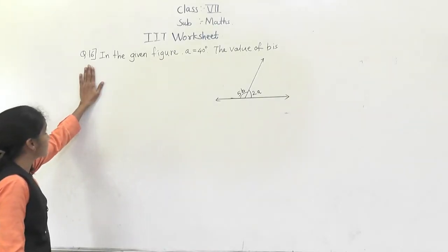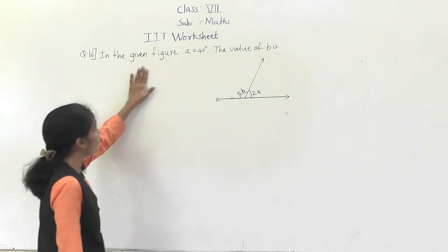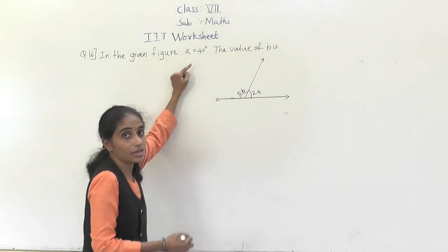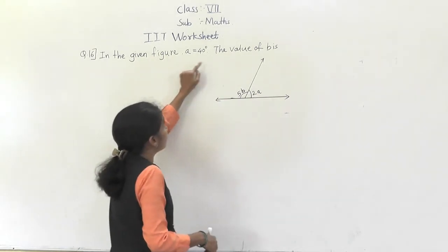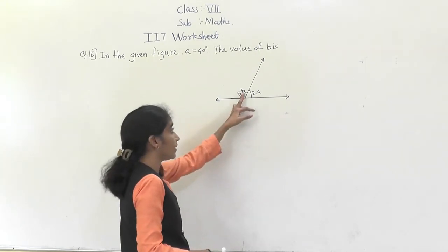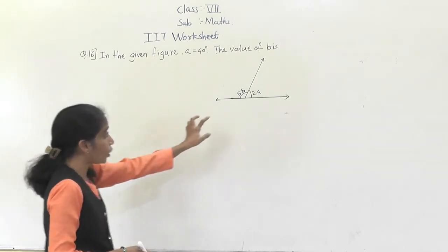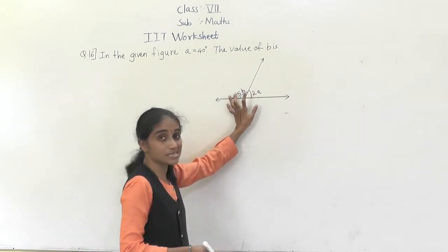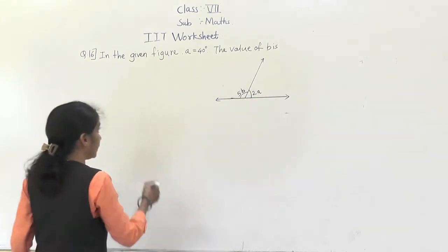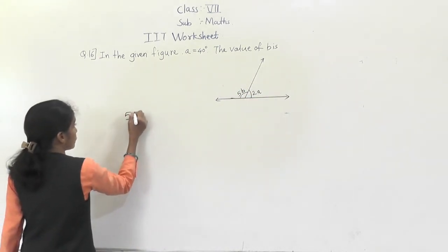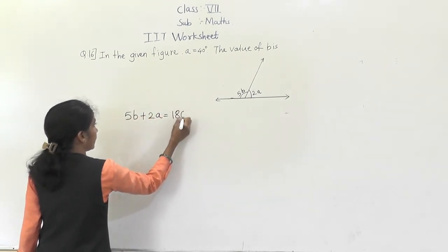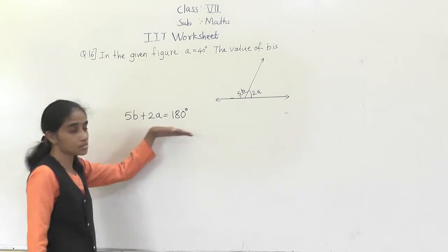Now let's solve question number 16. In the given figure, A is equal to 40 degrees — that is the given value of A. The value of B is to be found. If we observe this figure, these angles form a linear pair, so they are supplementary. Therefore 5B plus 2A equals 180 degrees.